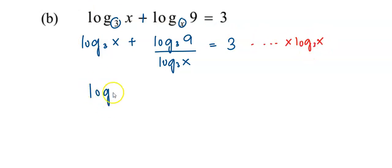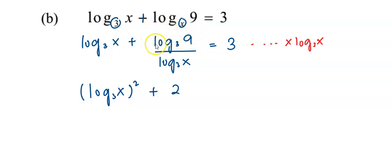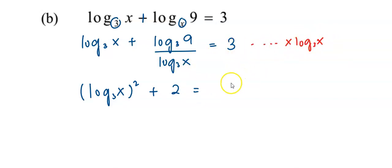I have log base 3 of x squared plus 2. Why 2? Because log base 3 of 9: 9 can be written as 3 squared, bring the 2 to the front, giving 2 multiplied by 1, which is 2. The log base 3 of x cancels with the one we multiplied. And 3 multiplied by log base 3 of x gives 3 log base 3 of x.